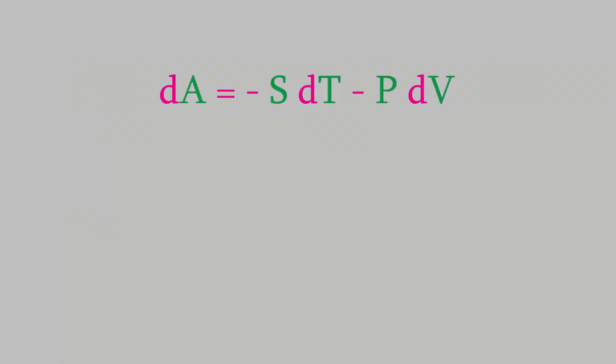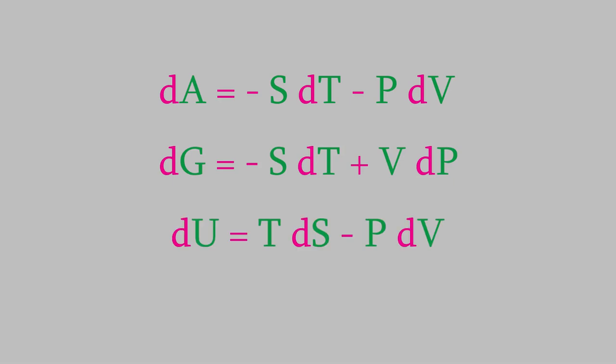Here are equations for the Helmholtz free energy, Gibbs free energy, the overall energy, and the enthalpy. In order to understand how to use these equations to determine the properties of a chemical process, even under conditions of changing temperature, pressure, and volume, it's important to keep one important thing in mind.